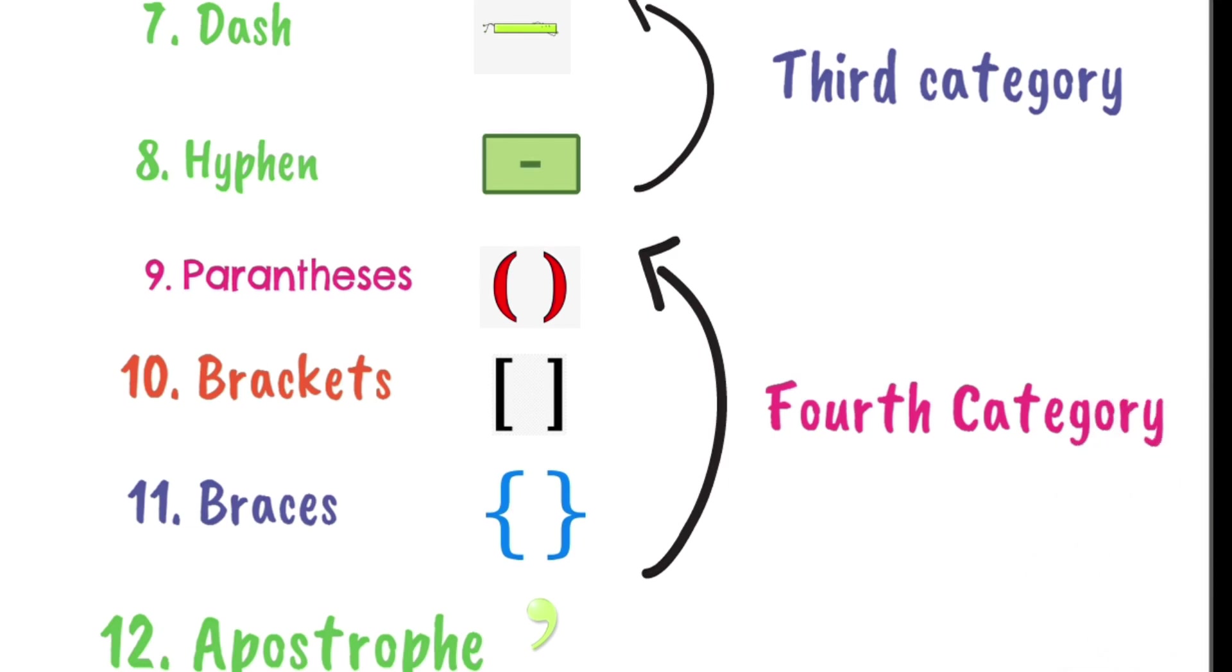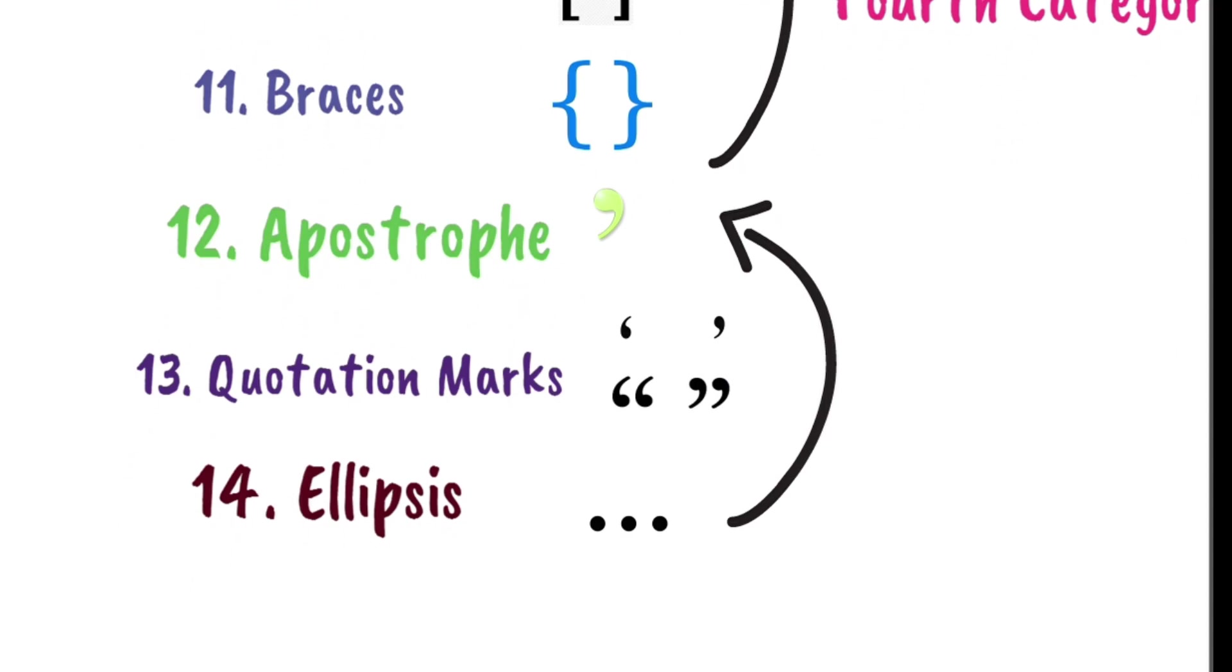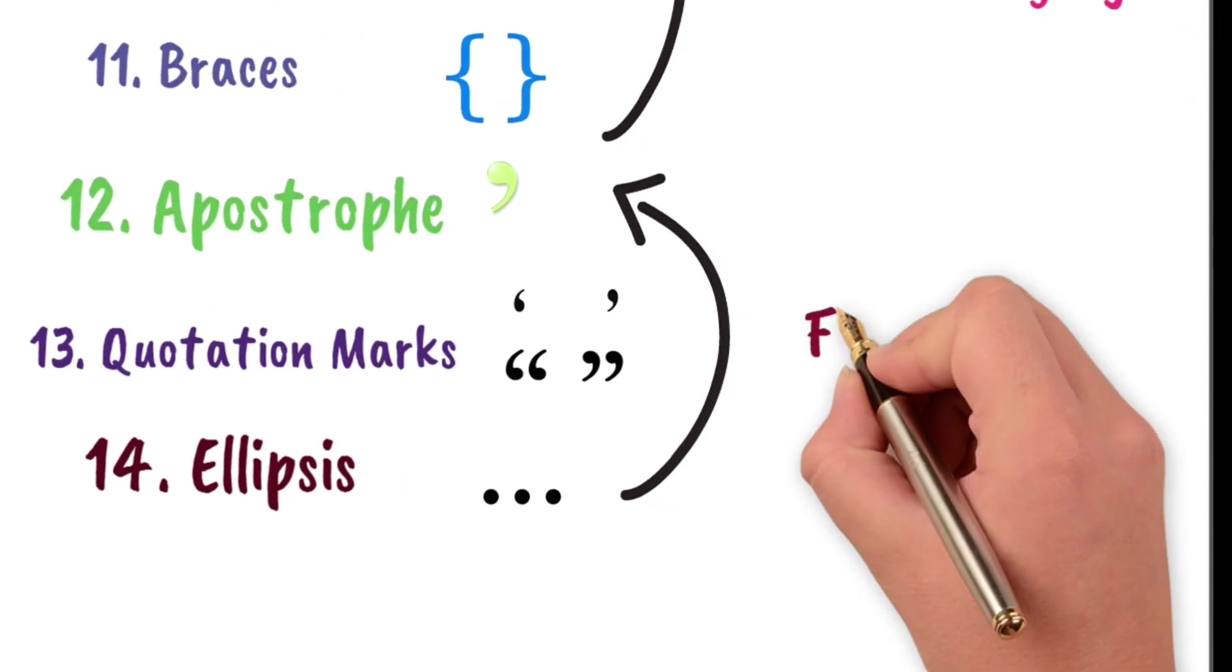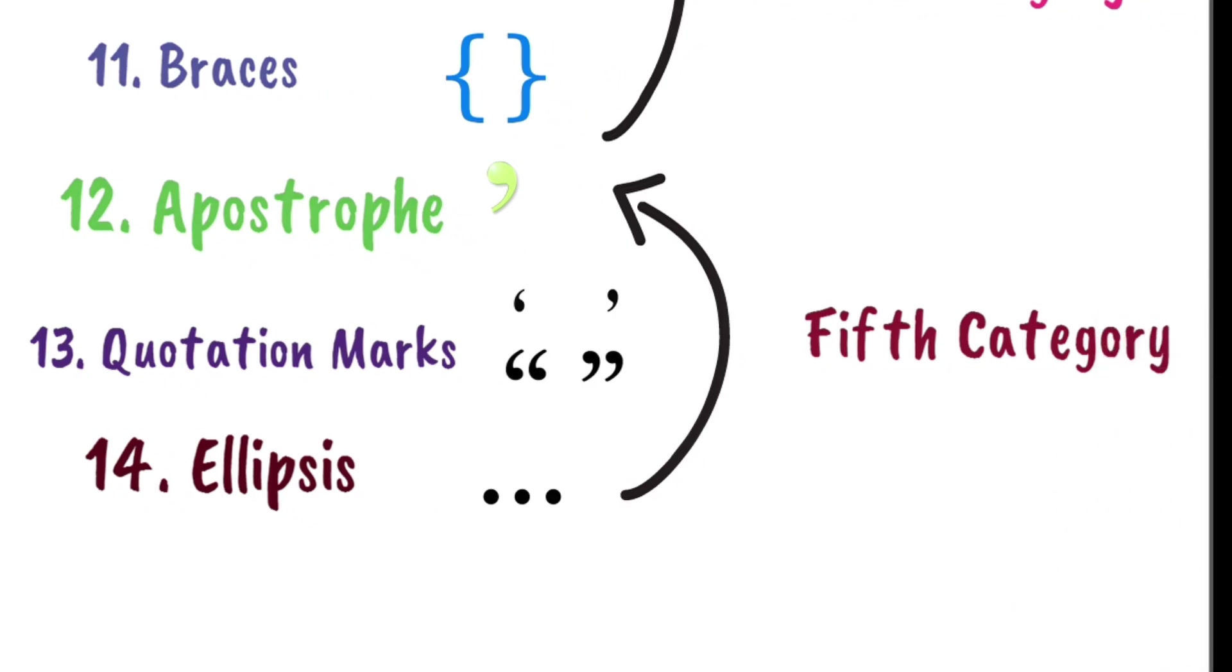And they have some other names as per their shapes: parentheses is known as round brackets, brackets are called as square brackets and the braces as the curly brackets. And in the fifth category, we have apostrophe, quotation marks and ellipses. The apostrophes and the quotation marks are stuck flying around the word, whereas the ellipses are placed at the bottom of the letters. The ellipsis is used for the omission.